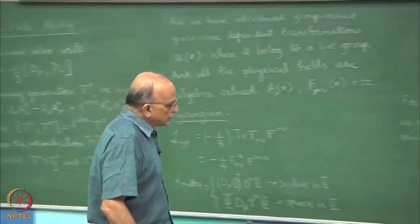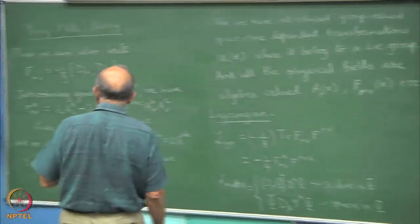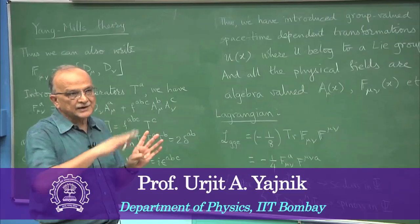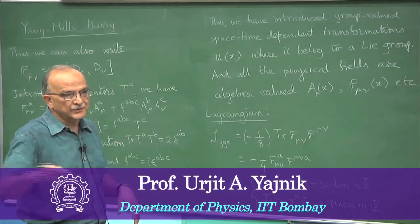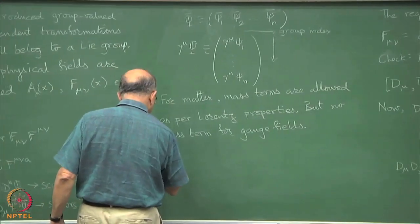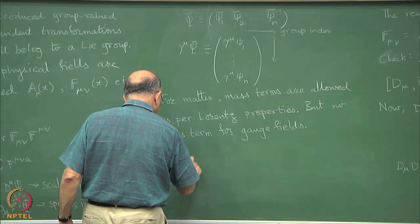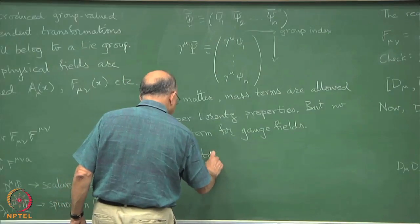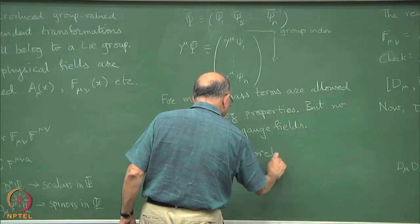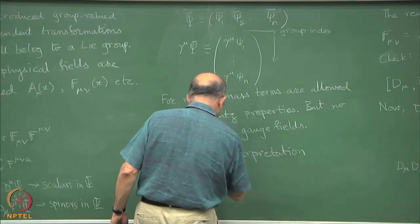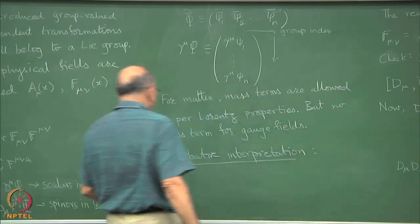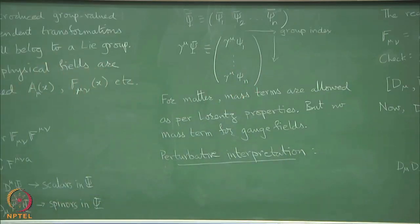The perturbation theory shows that the coupling G is asymptotically free as it is called. And G grows weaker at high energies. First, from the f mu nu, f mu nu terms.